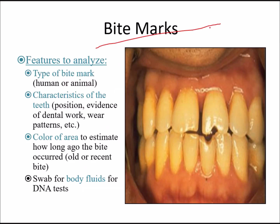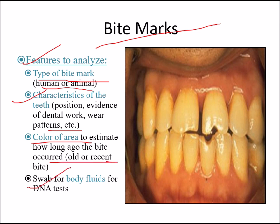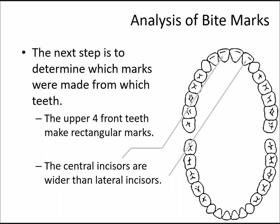To analyze bite marks, one looks at: position, evidence of dental work, wear pattern, color of the area to estimate how long the bite has occurred, and swabs are taken for DNA estimation.